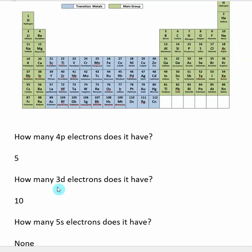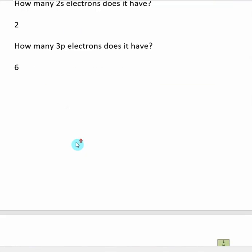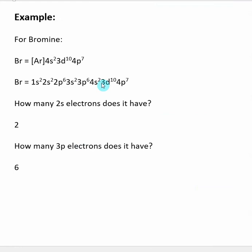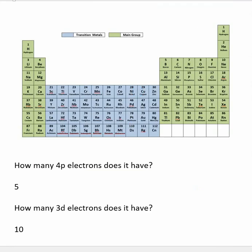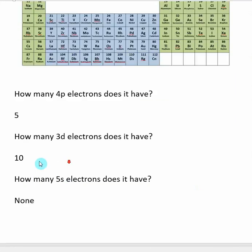We can ask how many 3d electrons it has. In the electron configuration, we can see that it has 10. We can also realize that to get to our 4p subshell, we need to completely fill our 3d subshell. So we know that it has 10 3d electrons.